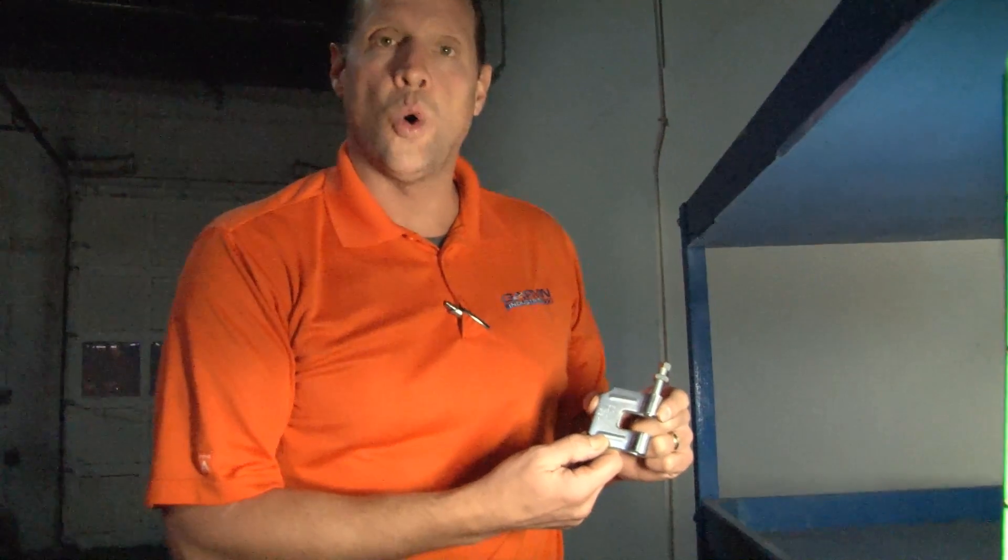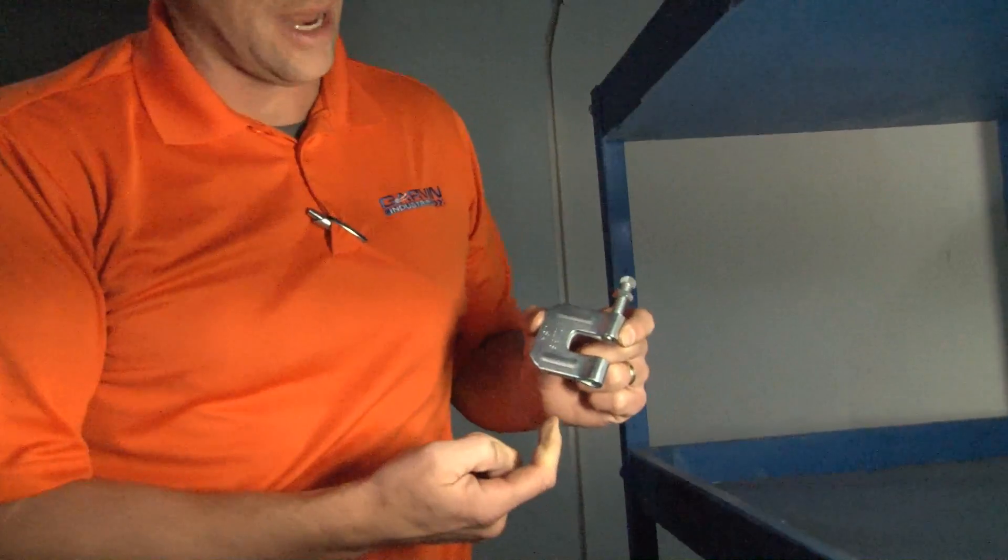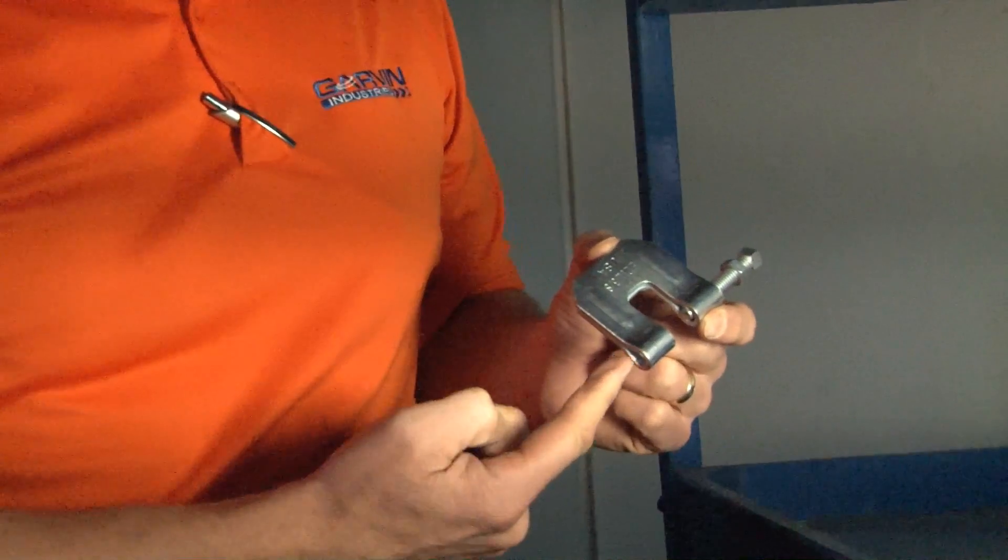Garvin Industries heavy-duty rod hanging beam clamps are made from galvanized steel and come in a variety of sizes for 3/8 inch threaded rod, 1/2 inch, 5/8 or 3/4 inch threaded rod that is inserted into the bottom of the clamp.